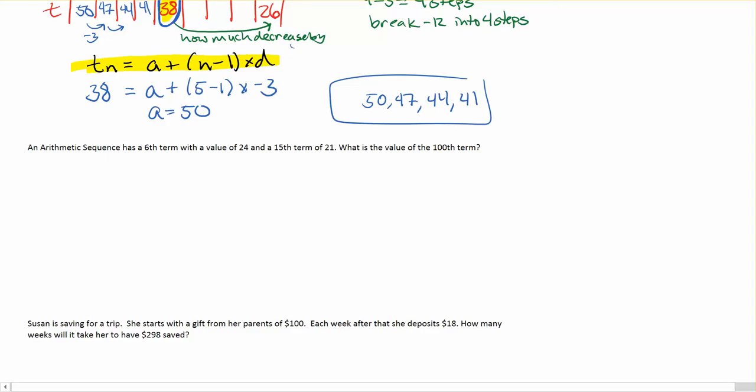More problem solving with the arithmetic sequence. Here we have an arithmetic sequence that has a 6th term with a value of 24, and a 15th term with a value of 21. This means my 6th term is equal to 24, and my 15th term is equal to 21. What is the value of the 100th term?